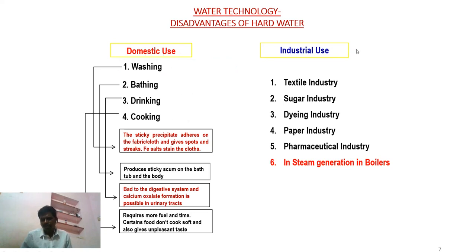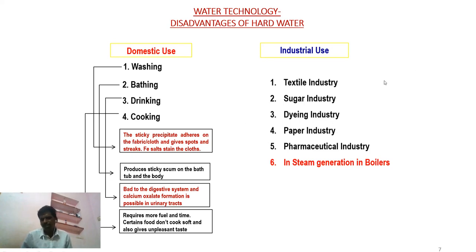In industry, we are using water to generate steam using boilers. Water is fed into the boiler and heated to generate steam, which is used for other purposes. The problem is that if the water contains salts, then the fuel consumption becomes more to heat that water. Also, scale and sludge formation are important disadvantages of hard water used in boilers. This can be explained in the next session.